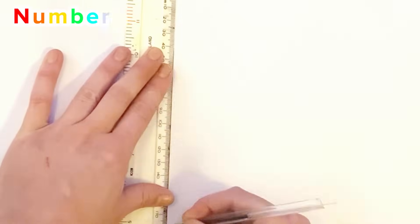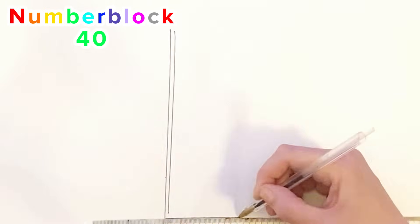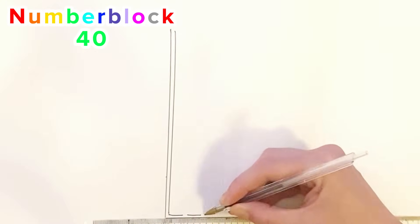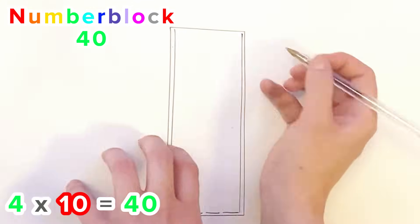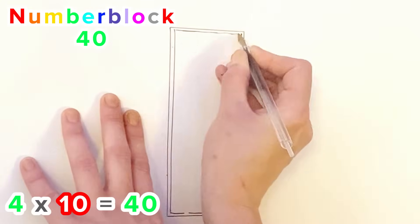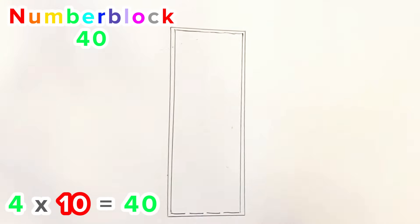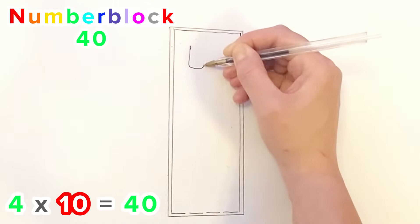Next is NumberBlock 40. NumberBlock 40 is 4 times 10 equals 40.